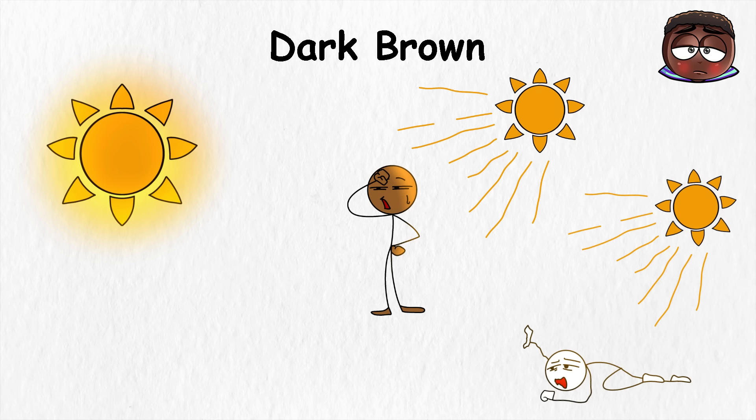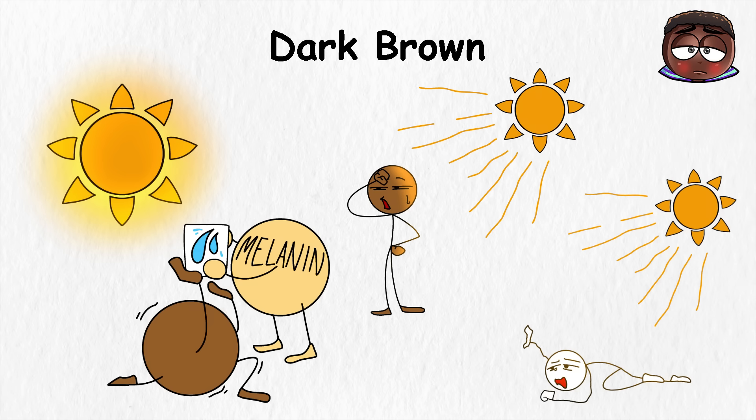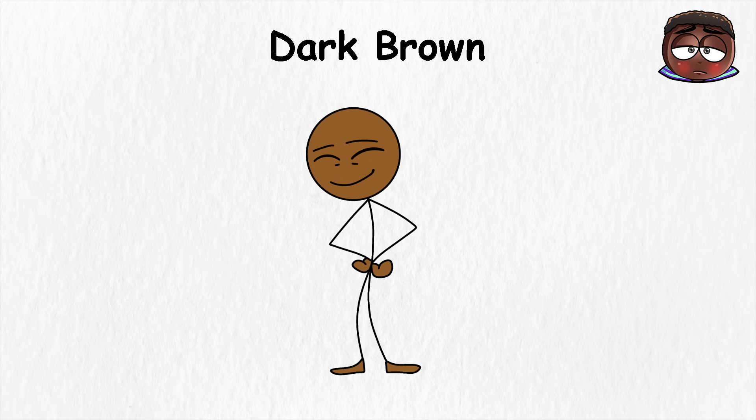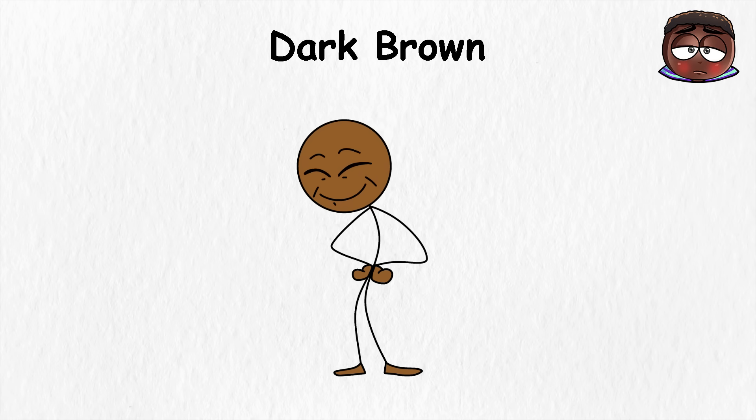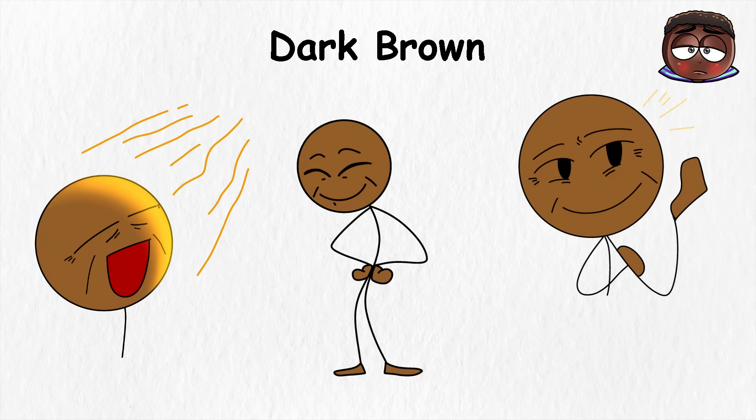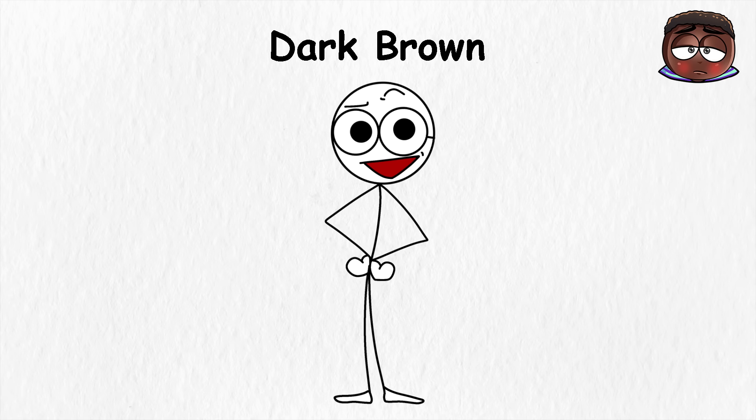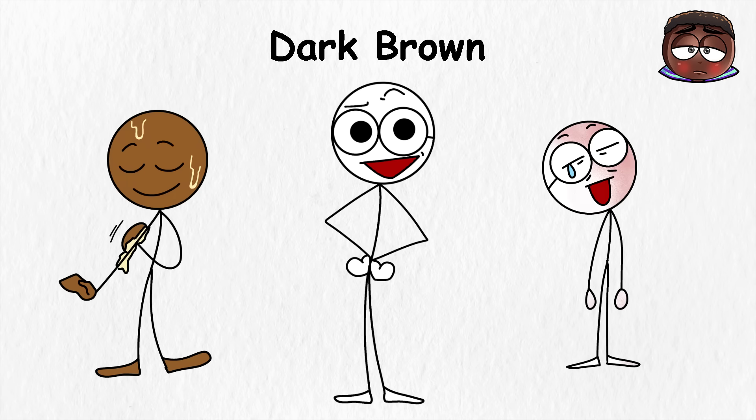This shade also brings another benefit. Melanin helps the skin hold onto moisture, which is a huge advantage in hot or dry climates. It's one reason people with darker skin often show signs of aging more slowly. Wrinkles and sun damage don't hit as hard because the skin is naturally protected. That doesn't mean you're immune, everyone needs care, but the difference is noticeable.